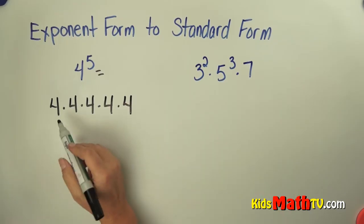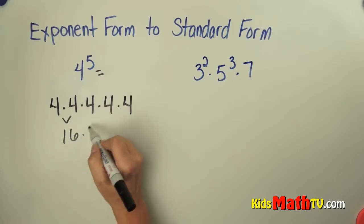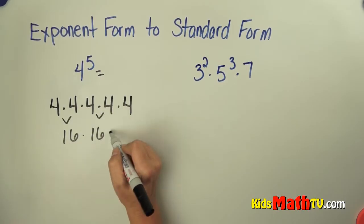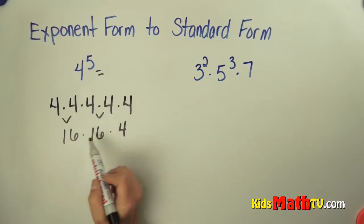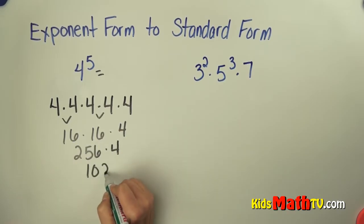Then what you do is you simply multiply. 4 times 4 is 16. 4 times 4 is 16 times 4. If we do 16 times 16 we get 256 times 4 is 1,024.